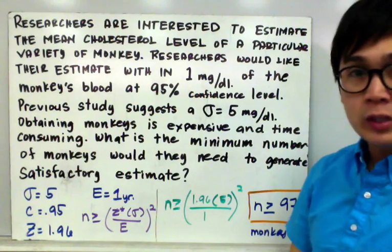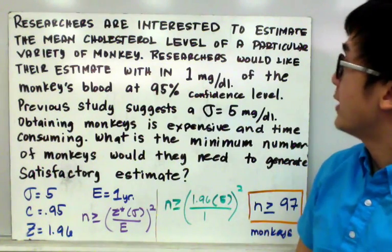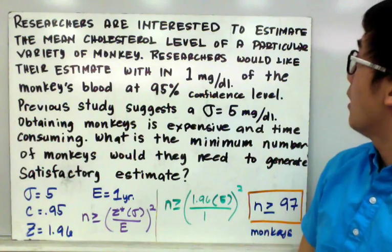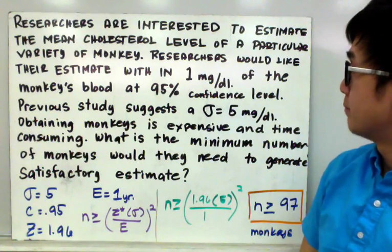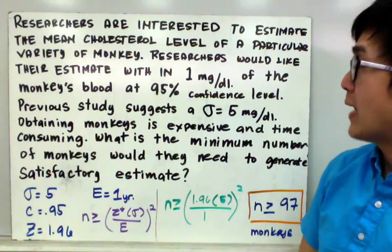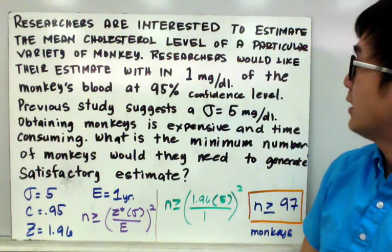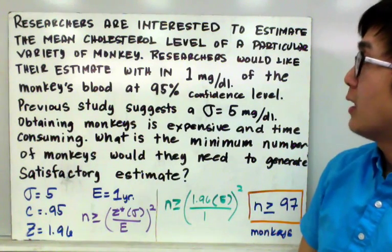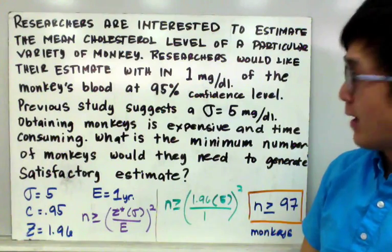In this word problem, researchers are interested to estimate the mean cholesterol level of a particular variety of monkey. Researchers would like their estimate within 1 mg/dL of the monkey's blood at 95% confidence level.